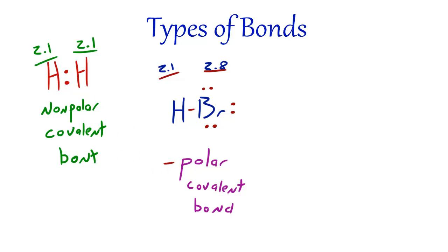Now polar pretty much just means unequal. They are more likely to gravitate towards one side as opposed to the other side. And we already know what covalent means - when they share.